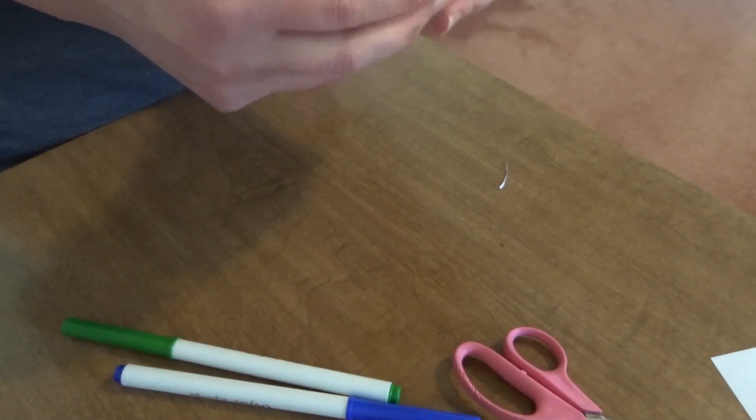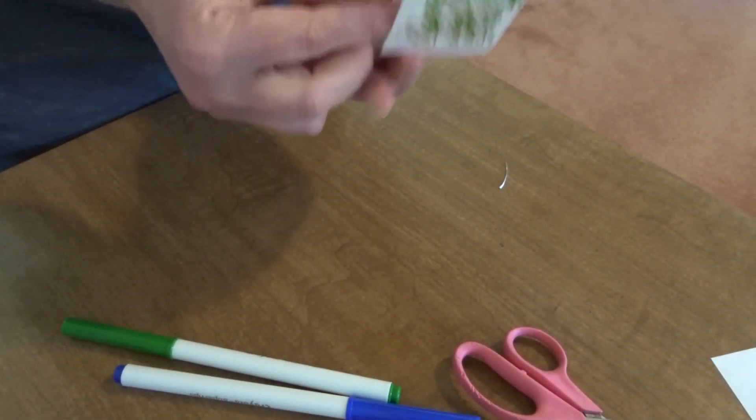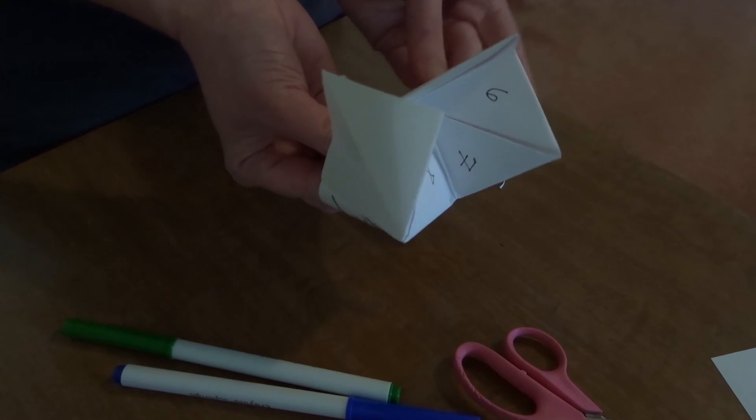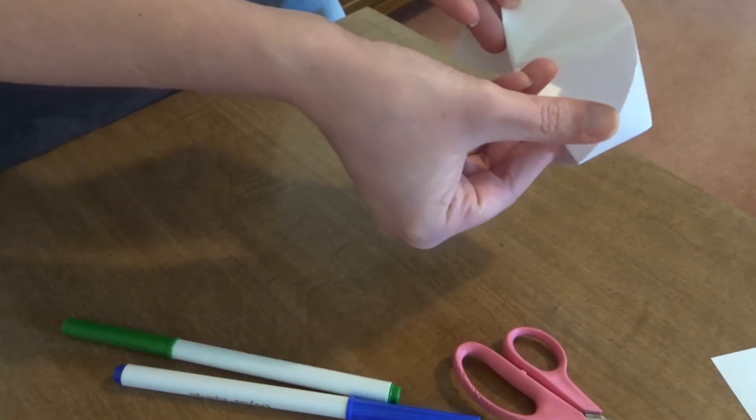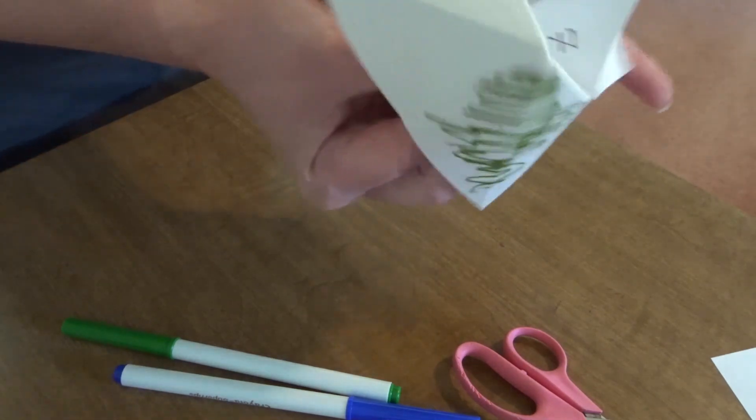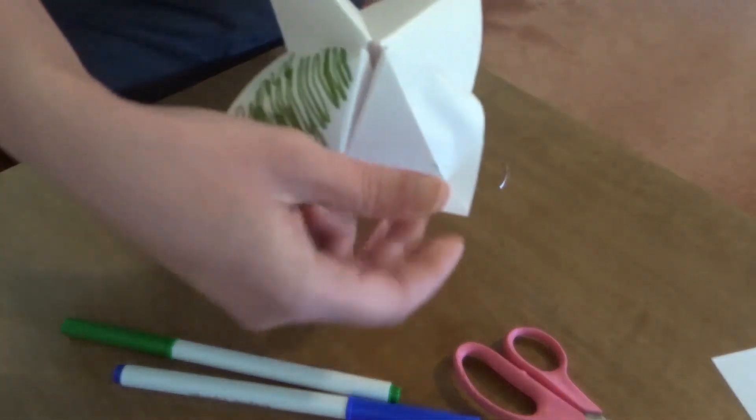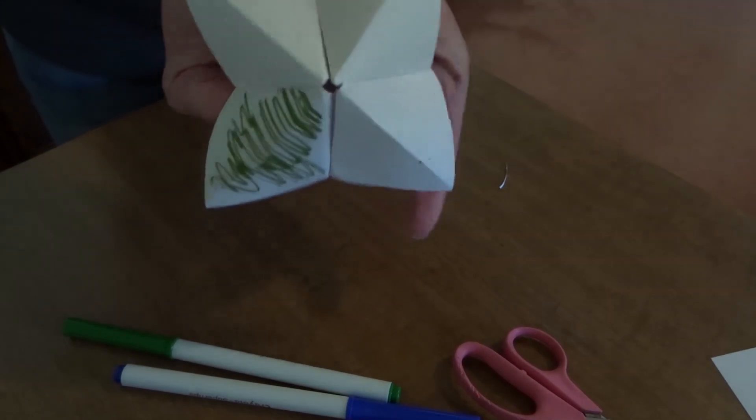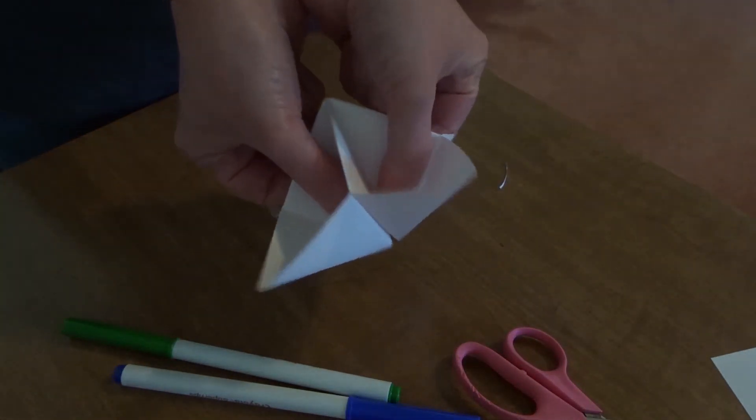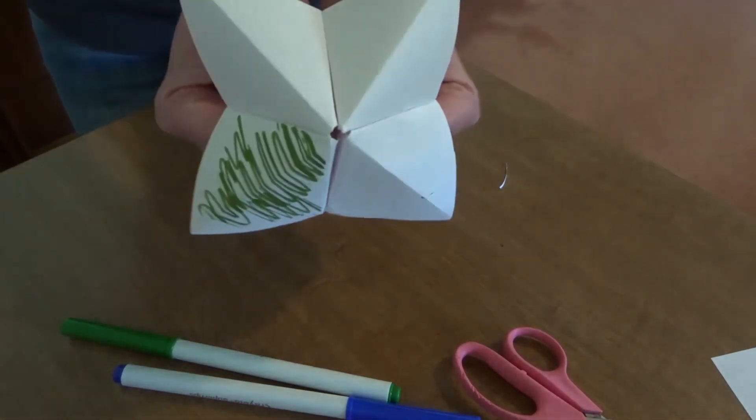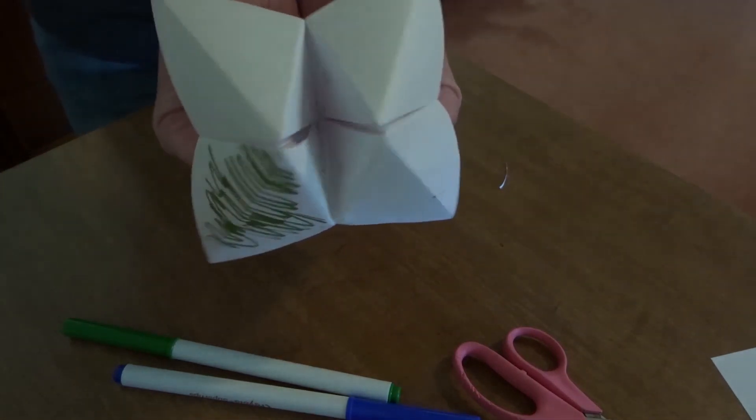So what we do is we stick our fingers into these parts right here, and we bring out the chatterbox. I've got four fingers in here, and I can operate the chatterbox like this.